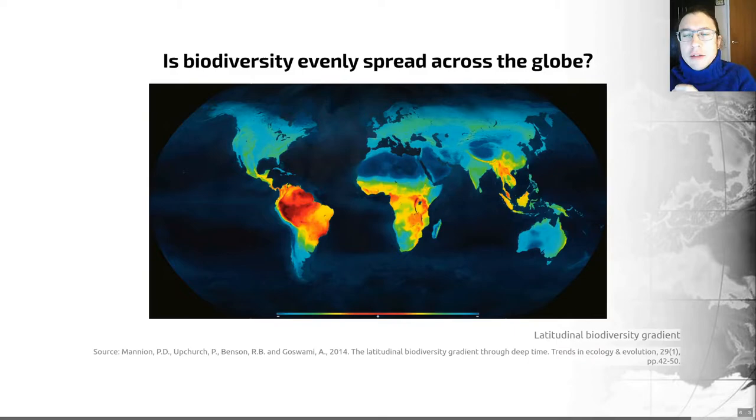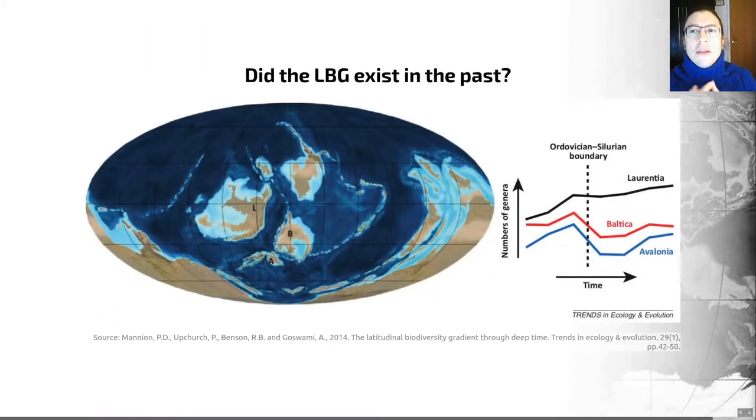But that is only one potential explanation of what we're seeing here. And actually, if we look at this over geological time, things become a bit more complicated. Deep time studies indicate that a tropical peak of diversity and then a poleward decline has not been a persistent pattern throughout the Phanerozoic, throughout the last 540 million years.